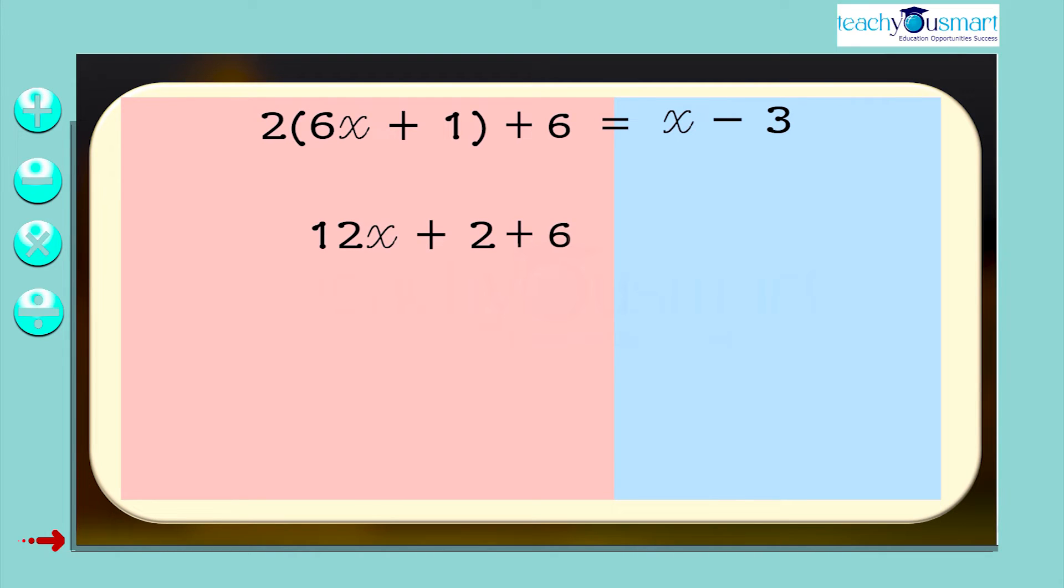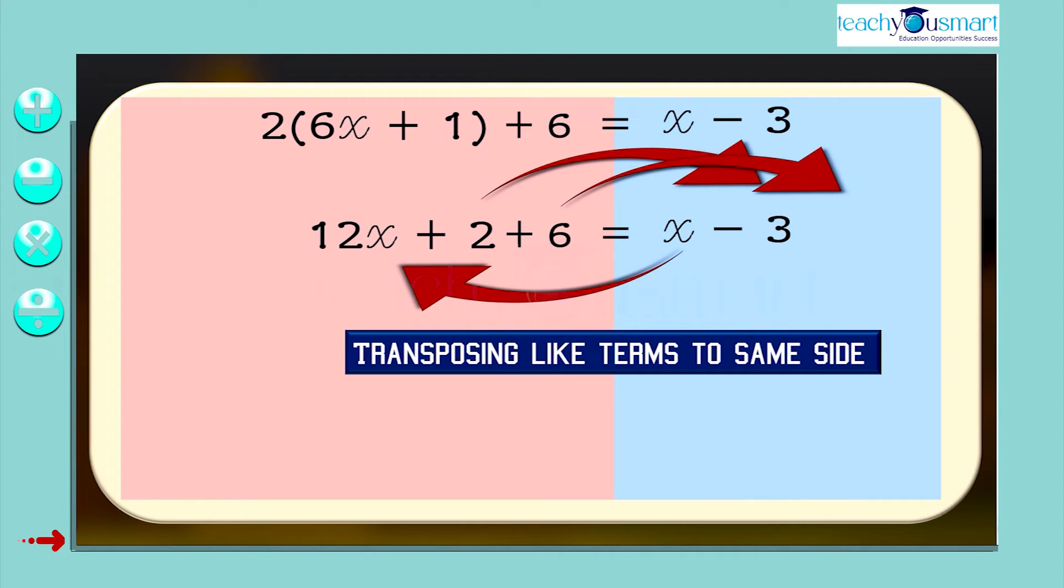12x + 2 + 6 = x - 3. Transposing like terms to the same side: 12x - x = -3 - 2 - 6.